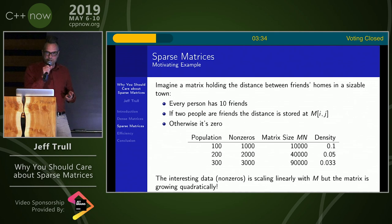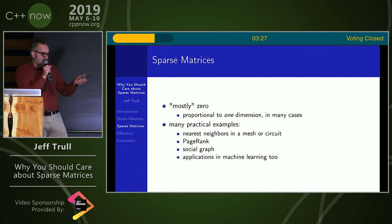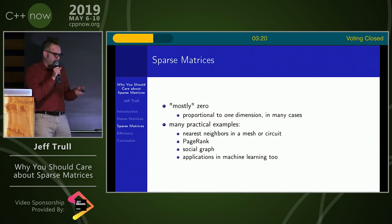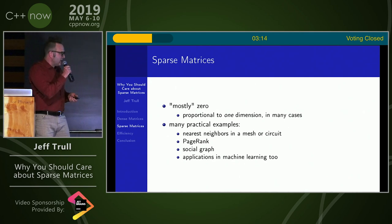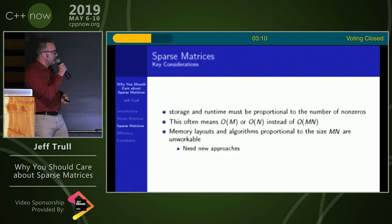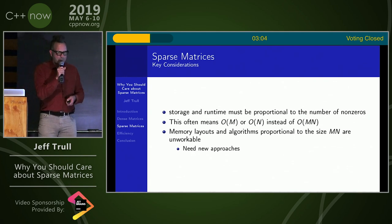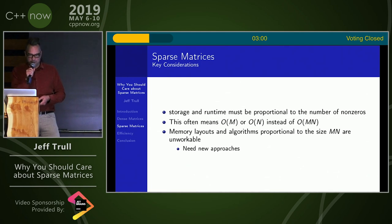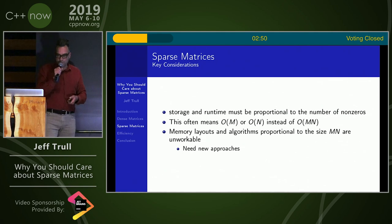So we need a different way of storing this that doesn't have this bad behavior. Sparse matrices are mostly zero, proportional to one dimension. There are a lot of practical examples: nearest neighbors in a mesh or circuit, page rank, links between webpages, social graphs like at Facebook, and machine learning applications. The key consideration is that storage used and runtime ought to be proportional to the number of non-zeros stored, not the overall matrix size. Memory layouts and algorithms proportional to the whole size of the matrix are going to be unworkable, so we need new approaches.